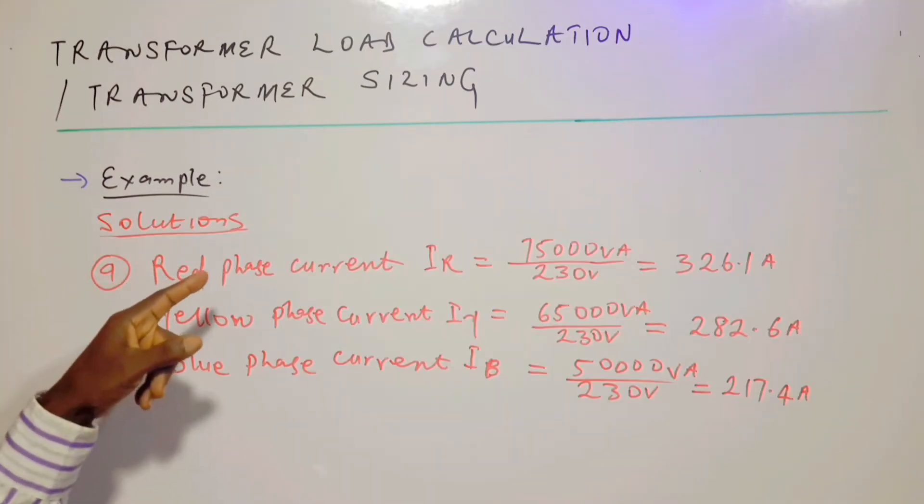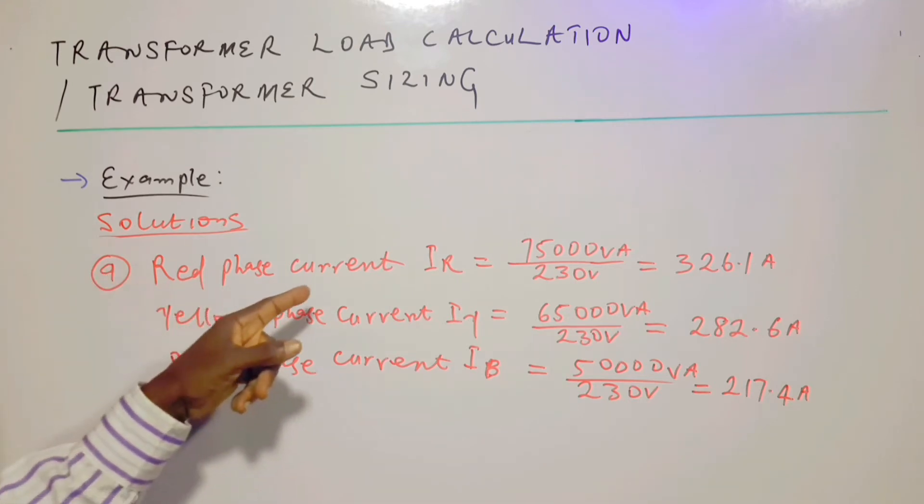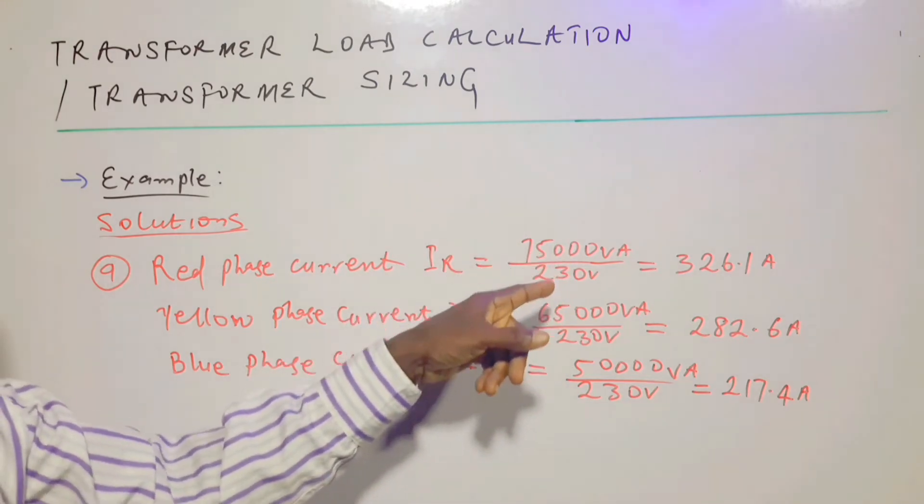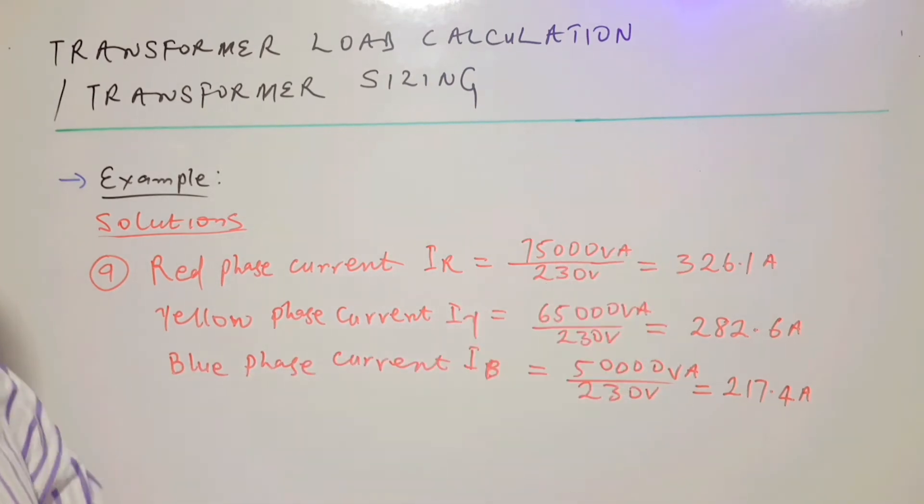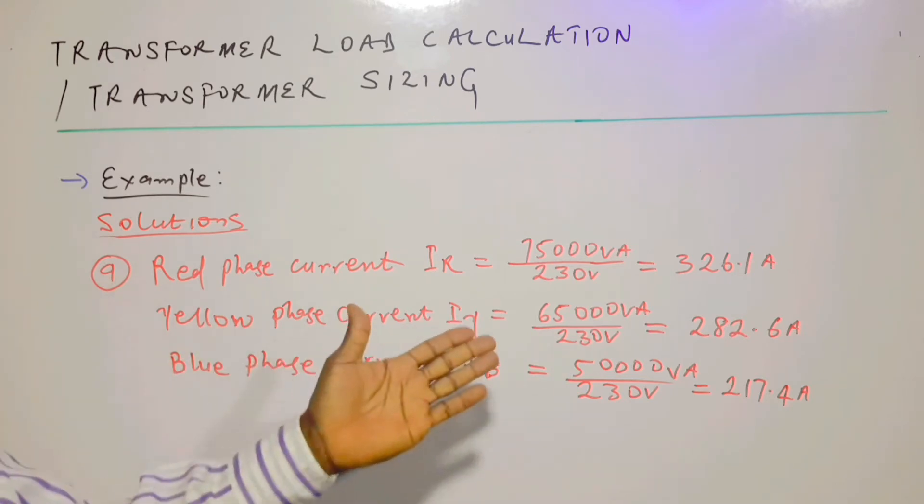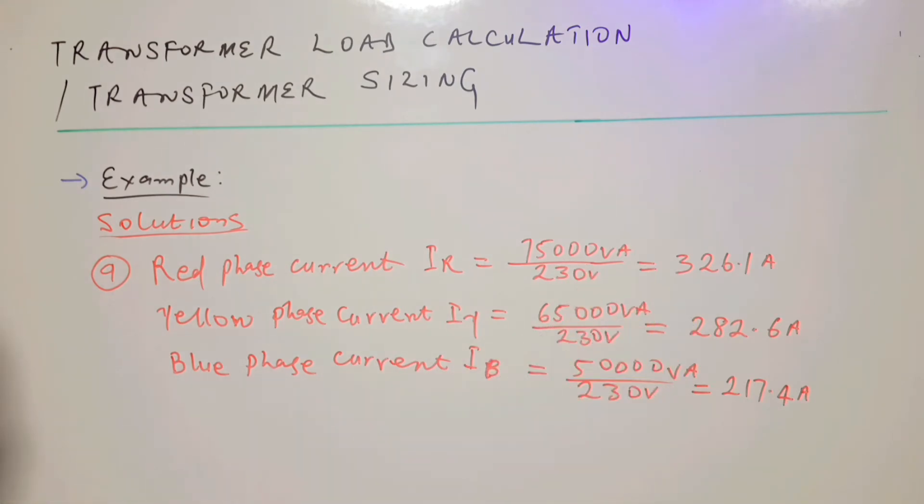This is the solution to the A part. The red phase current, denoted by IR, is equal to 75,000 VA divided by 230 volts. And that's the answer: 326.1 ampere. And similarly, these are the answers for the remaining part of the question.